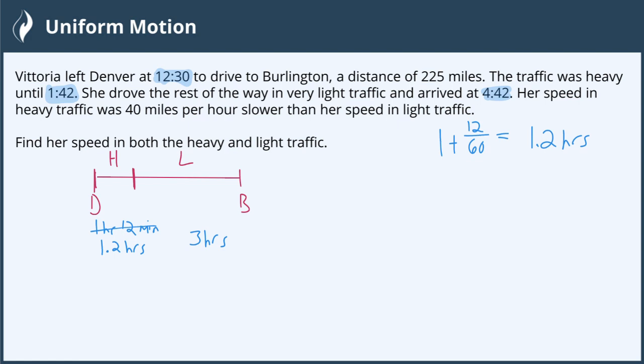The final thing is that we know the speed in heavy traffic was 40 miles per hour slower than the speed in light traffic. So let's say that we call the speed where Victoria is driving in the light traffic R. Then the speed in the heavy traffic is going to be R minus 40 because we are slower by 40 miles per hour.